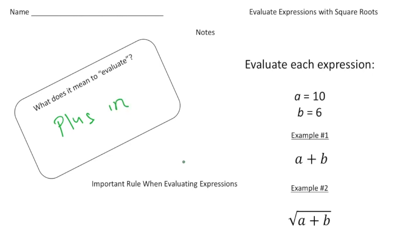So what exactly are we plugging in? Well here for our first example we're adding a plus b and they tell us above that a equals 10 and b equals 6. So all we're going to do is we're going to substitute or plug in the values for a and b into the expression. So a is going to be 10 and b is going to be 6 and it looks like we're adding them together.